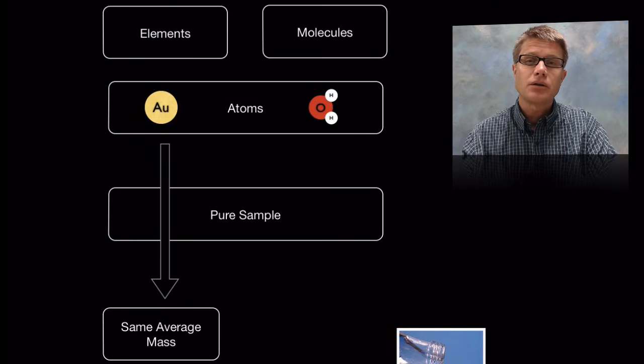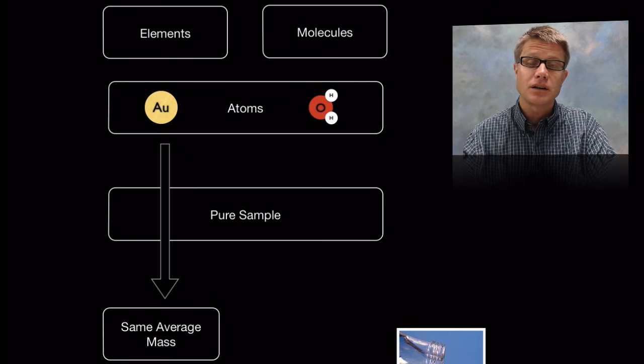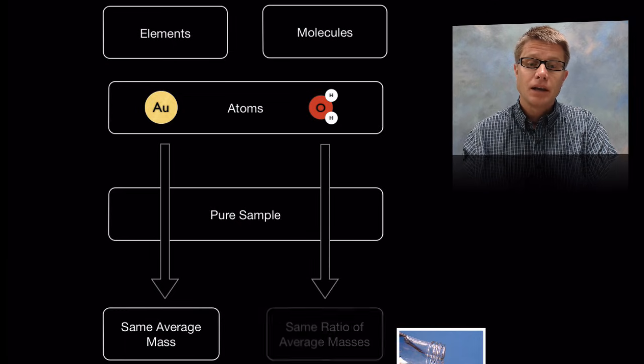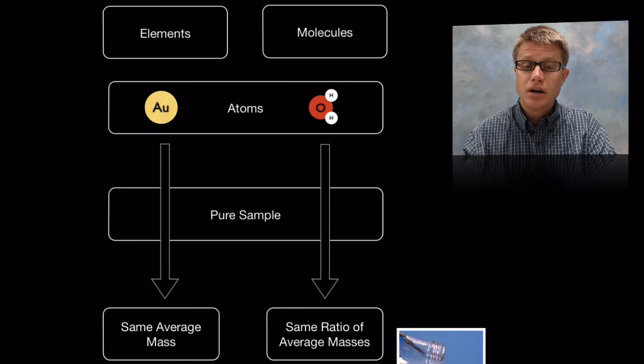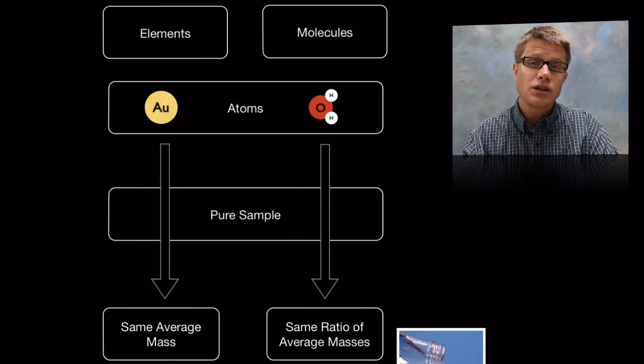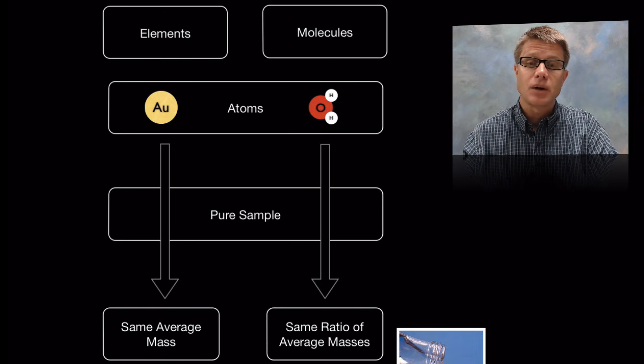And so if we were to take a pure sample of it, it's only that element, we would find that no matter how big the size of that object is it's going to have the same average mass. Likewise if we were to take a pure sample of a molecule like water, we're going to find that there's the same ratio of the average masses. In other words, the average mass of the oxygen and the average mass of the hydrogen.